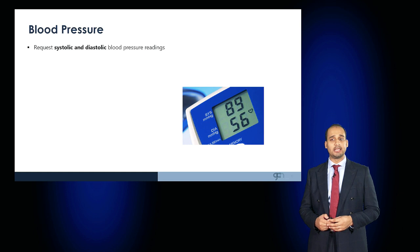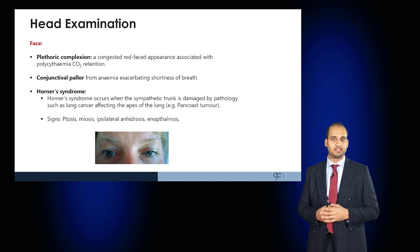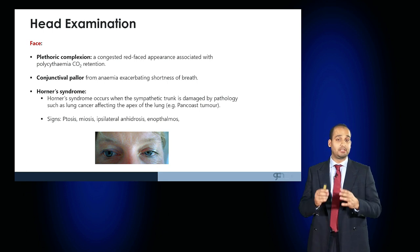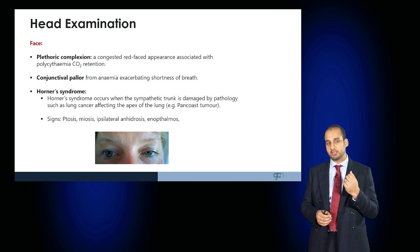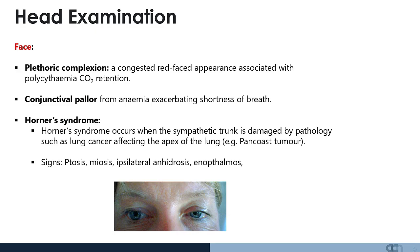Request a systolic and diastolic blood pressure, then examine the head. Observe for a plethoric complexion — a congested red face appearance associated with polycythaemia as a result of carbon dioxide retention causing vasodilatation. Assess conjunctival pallor by asking the patient to lower their lower eyelid, which may suggest anaemia that can exacerbate shortness of breath. Observe the eyes carefully for Horner's syndrome, which would result in ptosis, miosis, ipsilateral anhydrosis, and enophthalmos — a droopy eyelid, constricted pupil, loss of sweating on the same side, and a sunken eye. This can occur if the sympathetic trunk is damaged or compressed by lung cancer, usually an apical tumour such as a Pancoast tumour.